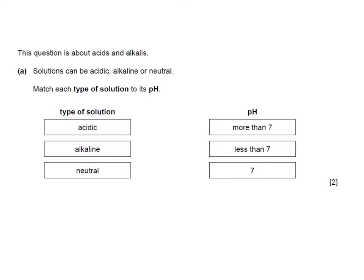Here's a past paper question. This question is about acids and alkalis. Solutions can be acidic, alkaline or neutral. Match each type of solution to its pH. Well a neutral solution would be pH 7, an alkaline solution would be more than 7 and an acidic solution would be less than 7.